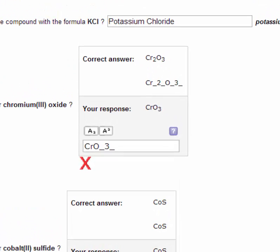Chromium(III) oxide is Cr2O3. You provided CrO3. Remember that the Roman numeral is the charge on the chromium, which is positive 3.